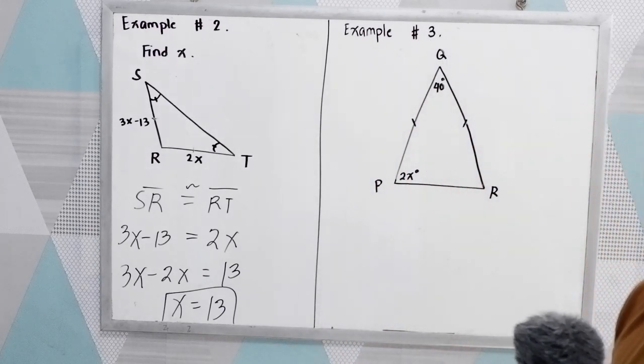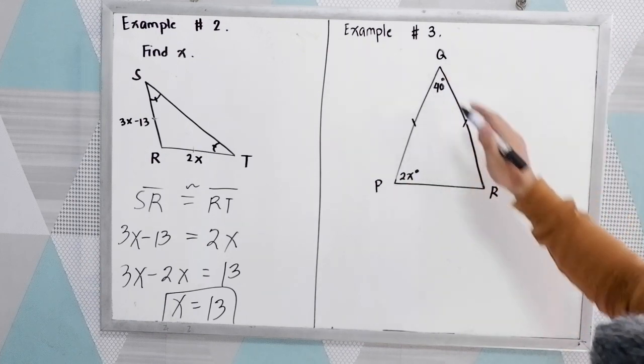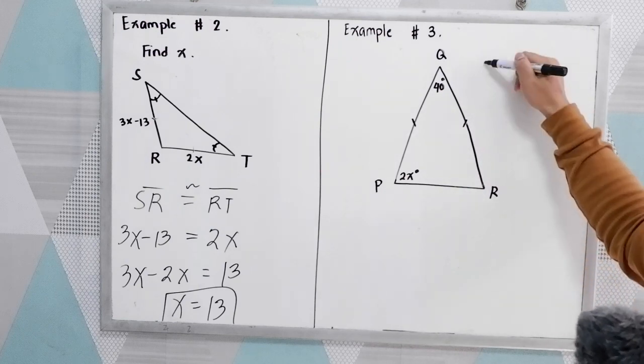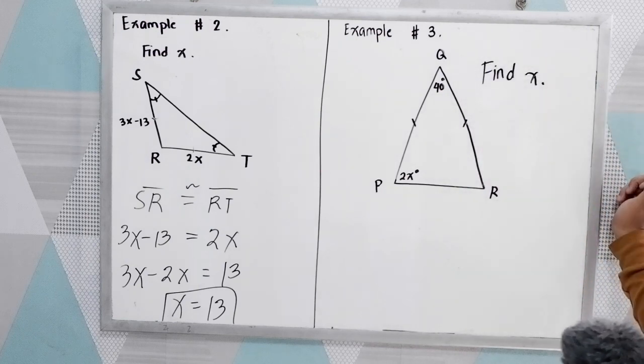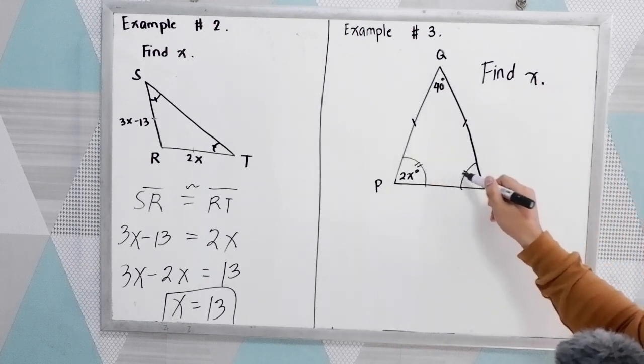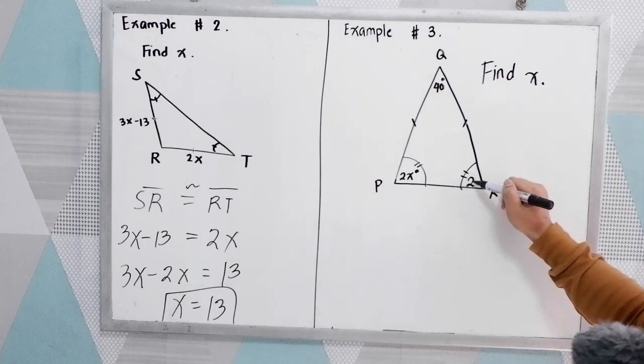Next. Example number 3. We have a triangle PQR. Our legs. We're going to find X. We know that this is our base angle. If this is 2X, the other base angle is also 2X.